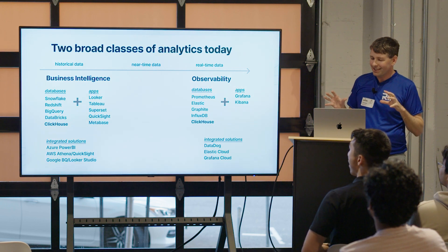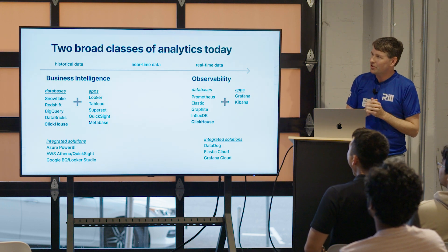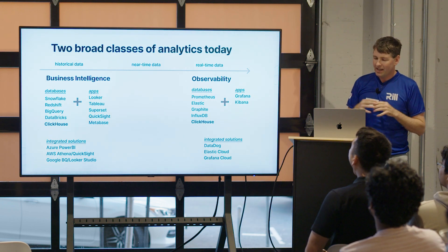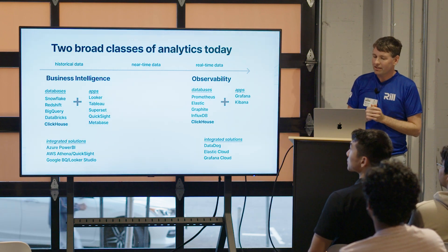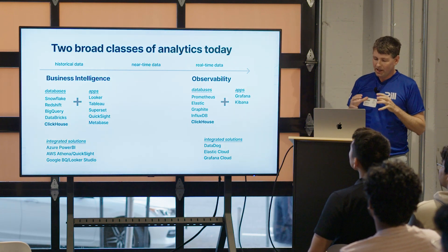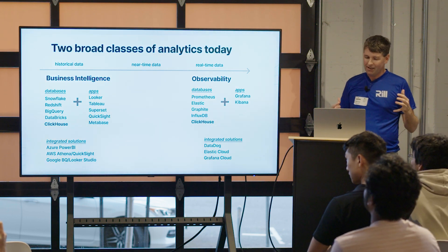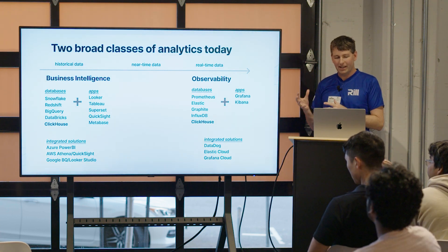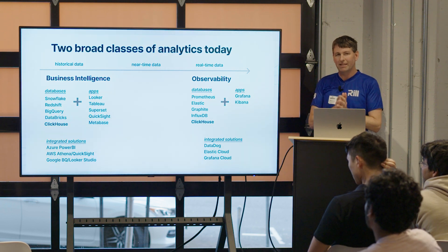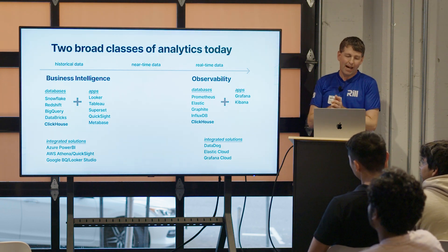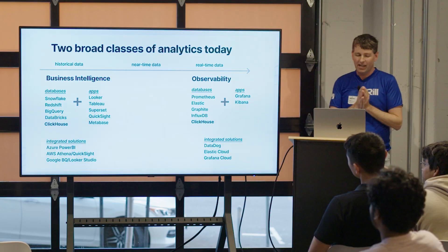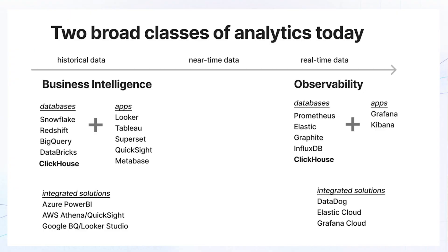To overgeneralize, there are two classes of analytics that are on a collision course of sorts. Historically, in a very mature category, is business intelligence — we see Snowflake, Redshift, BigQuery, Databricks. These folks have been building backends for traditional BI tools for decades. But recently, if you look at where ClickHouse has been adopted widely, there's another class of tools positioning themselves as observability tools.